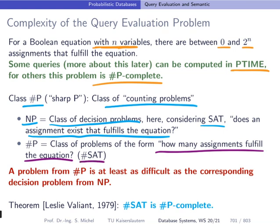But now this problem here is certainly more complicated, because we don't only need to know that there is one fulfillment, but we need to know how many. This means that the problem from sharp P is at least as complicated or difficult to compute as the corresponding decision problem from NP.